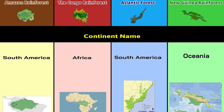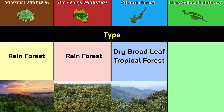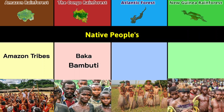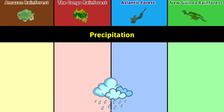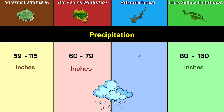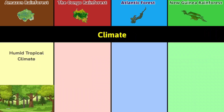Continent: South America, Africa, South America, and Oceania. Type: rainforest, rainforest, dry broadleaf tropical forests, and rainforest. Native peoples: Amazon tribes, Baka, Bambuti and others, Tupi and Guarani, and Papuans. Precipitation: 80 to 160 inches, 59 to 115 inches, 60 to 79 inches, and 68 inches.